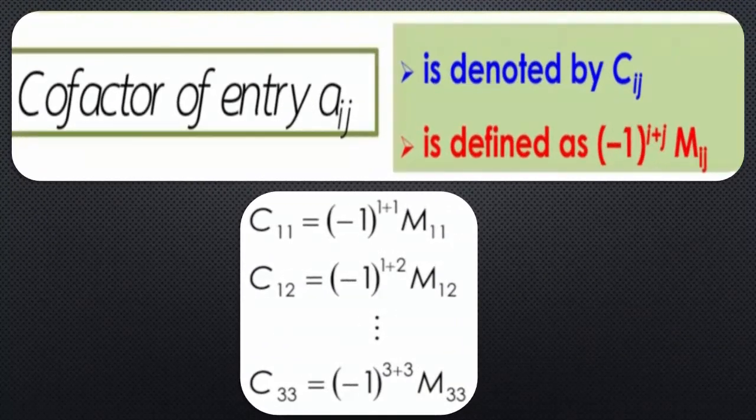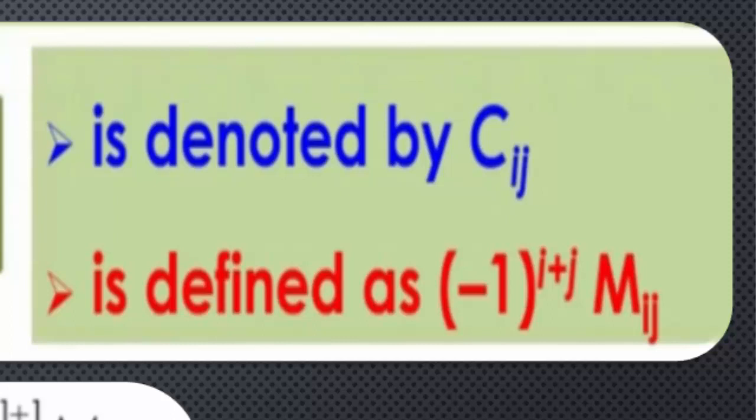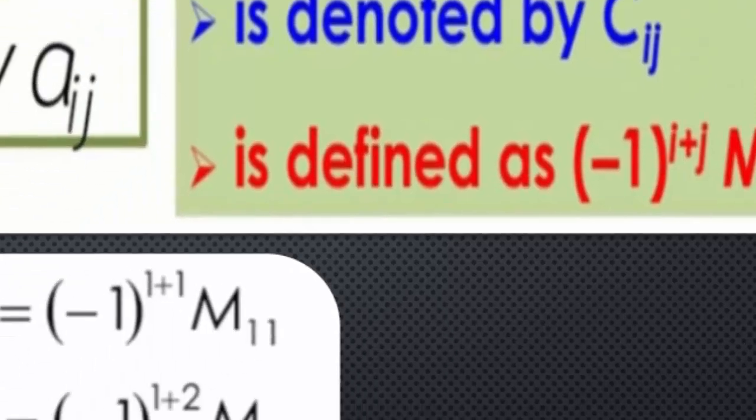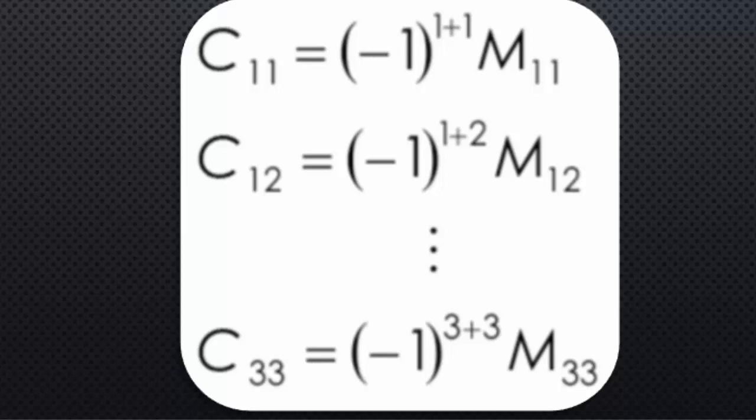The cofactor formula is Cij equals (−1)^(i+j) times Mij, where i and j denote row and column numbers. For example, C11 equals (−1)^(1+1) times M11, where (1,1) denotes first row and first column. C12 equals (−1)^(1+2) times M12, where (1,2) denotes first row and second column. The sign (−1)^(i+j) determines the sign for the cofactor: if the power is even, the cofactor equals the minor; if the power is odd, the cofactor equals minus the minor.